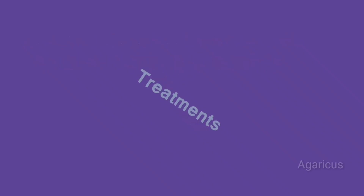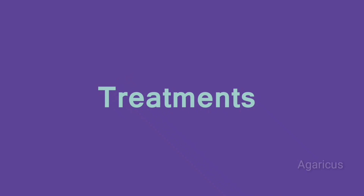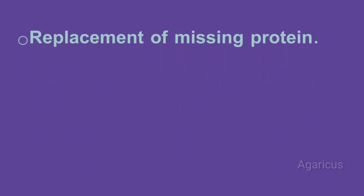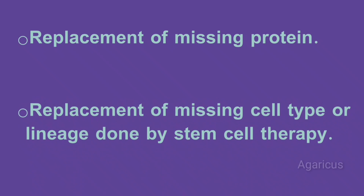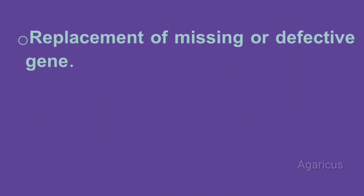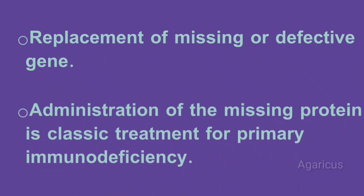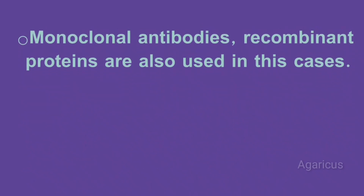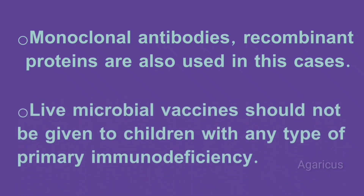Next we are discussing treatment of primary immunodeficiency disorders. The first approach is replacement of missing protein. Next, replacement of missing cell type or lineage done by stem cell therapy. Replacement of missing or defective gene is also an option. Administration of missing protein is a classic treatment. Monoclonal antibodies and recombinant proteins are also used. Live microbial vaccines should not be given to children with any type of primary immunodeficiency.